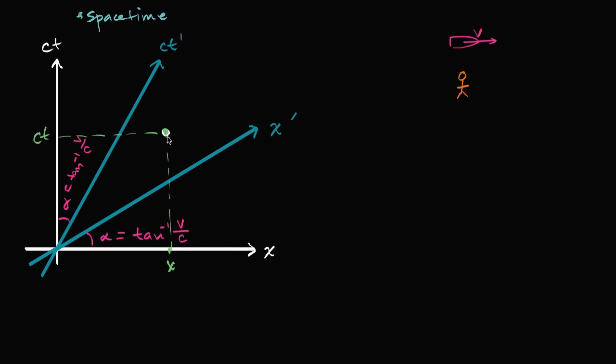What would be the coordinates in her frame of reference? We've already thought about how to read these Minkowski spacetime diagrams. To find her x-prime coordinate, we would just go parallel to the ct-prime axis — so that would be the x-prime coordinate. And to figure out the ct-prime coordinate, we would just go parallel to the x-prime axis. Now, how do you actually transform from x to x-prime, and from ct to ct-prime? To do that, we're going to introduce in this video the Lorentz transformations.